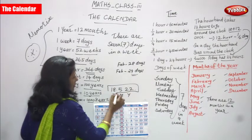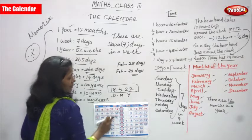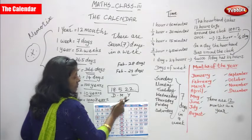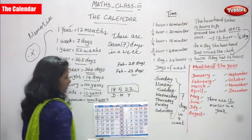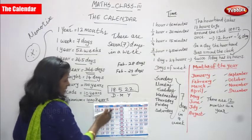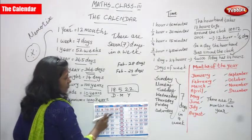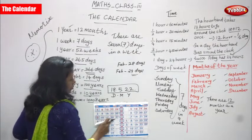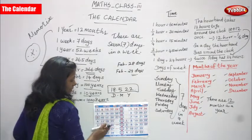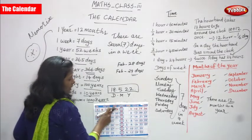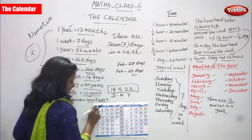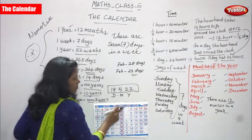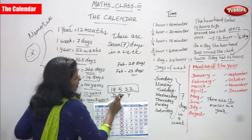How do we write the date? First write the date, then the month in the center, and last mention the year. So: date is 18, month is May which is the 5th month, year is 2022. We write it as 18.5.2022. D stands for date, M stands for month, and Y stands for year.